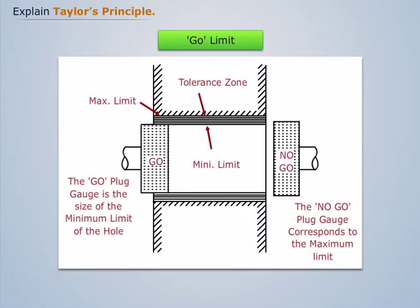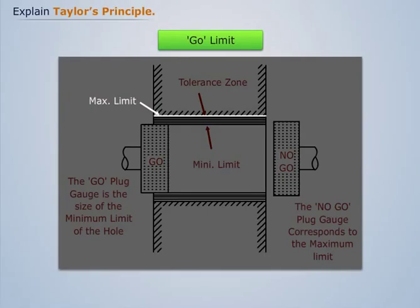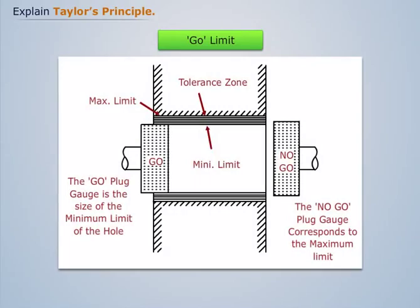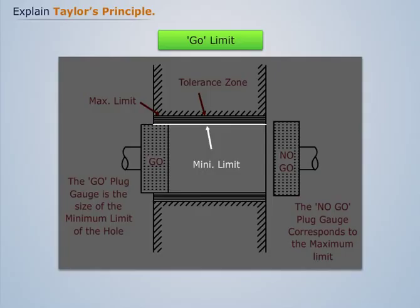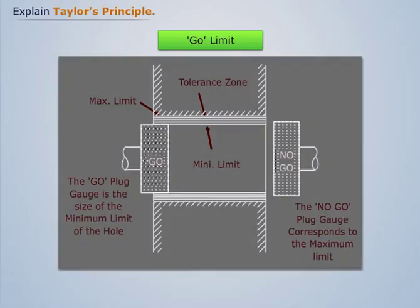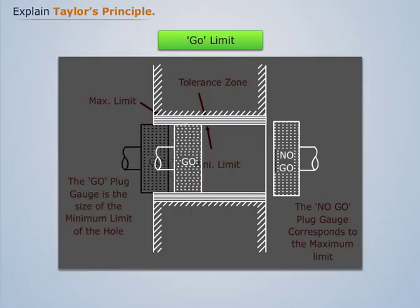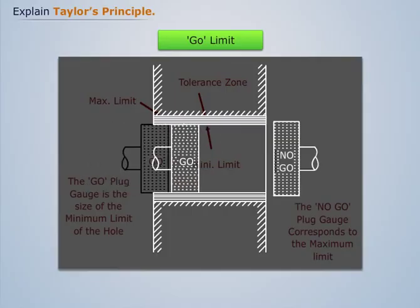The Go limit is the one between the two size limits which corresponds to the maximum material limit. The upper limit of a shaft and the lower limit of a hole are determined. The Go gauge can check one feature of the component in one pass.